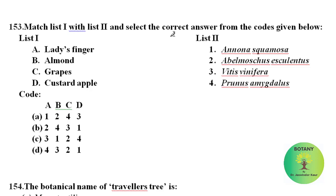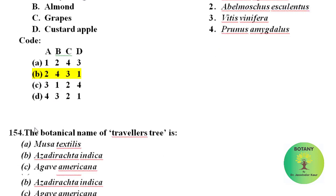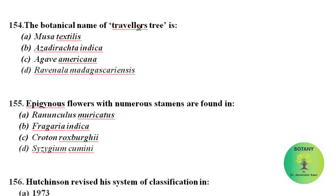Match List 1 with List 2 and select the correct answer from the options given below. In List 1, common names are given and in List 2, scientific/botanical names are given, and we have to match. The correct option among these is B. The botanical name of Traveller's tree is Ravenala madagascariensis.